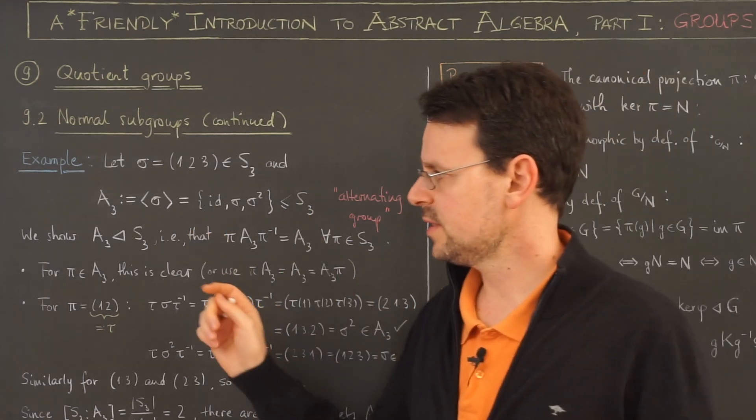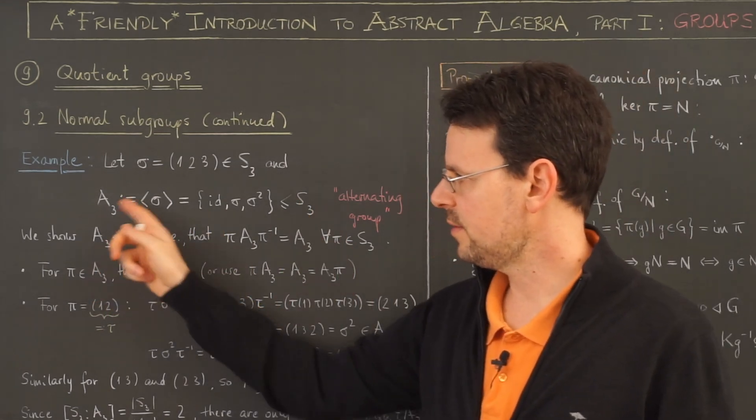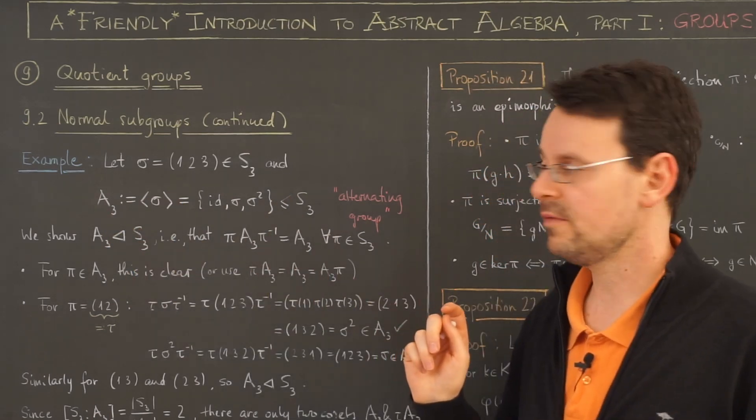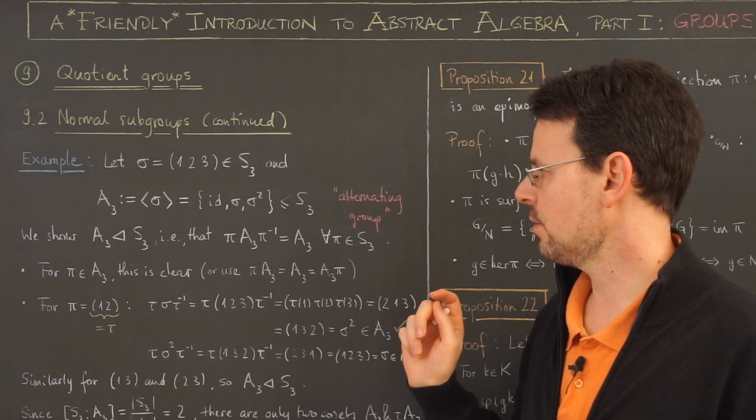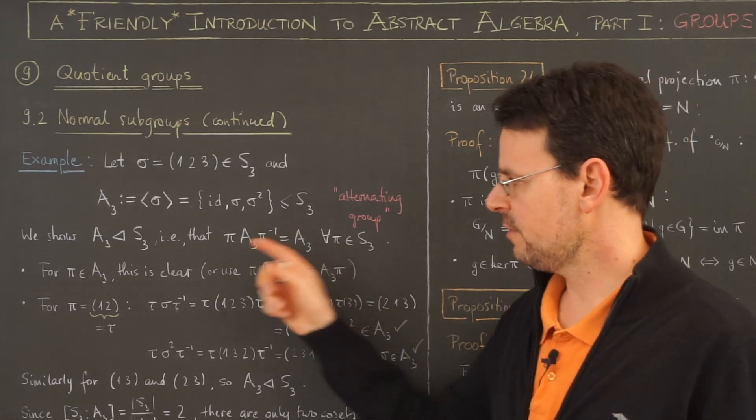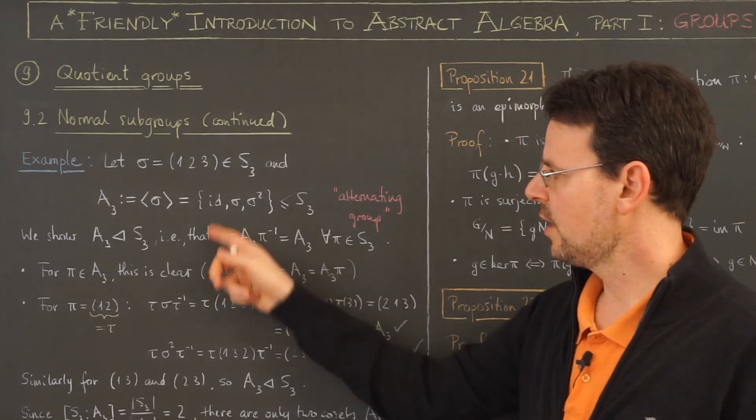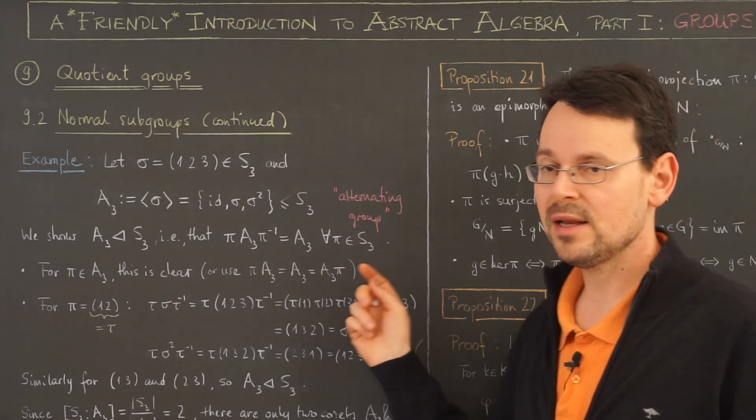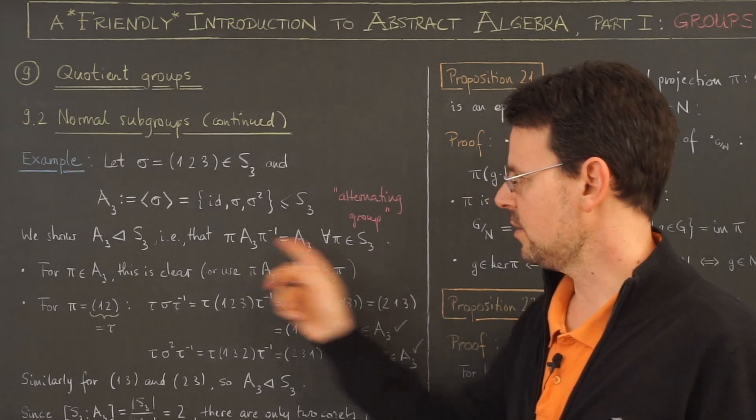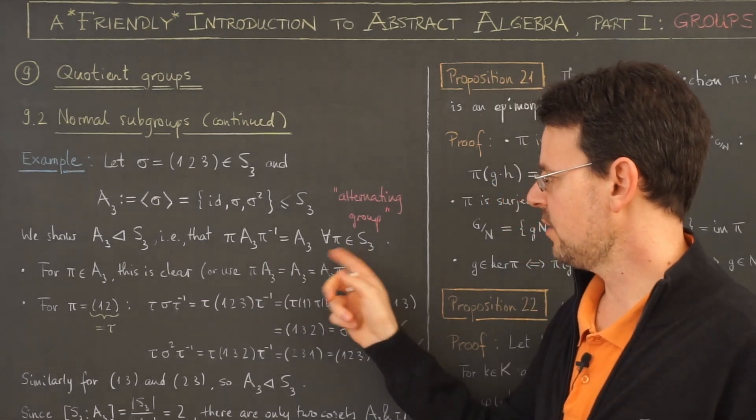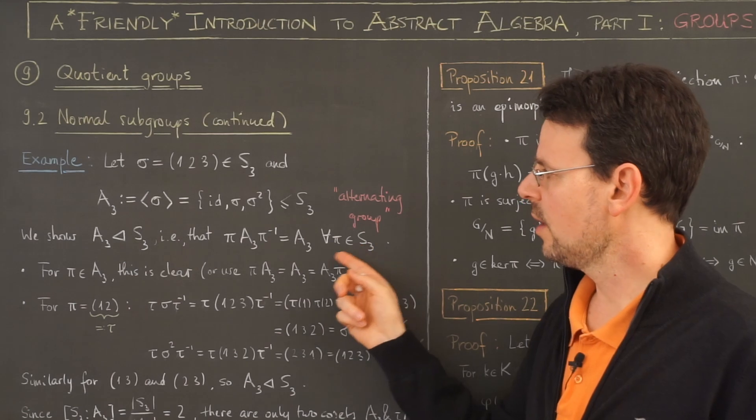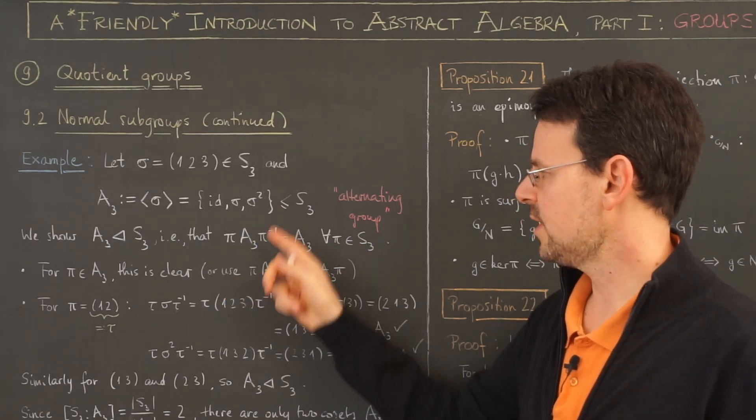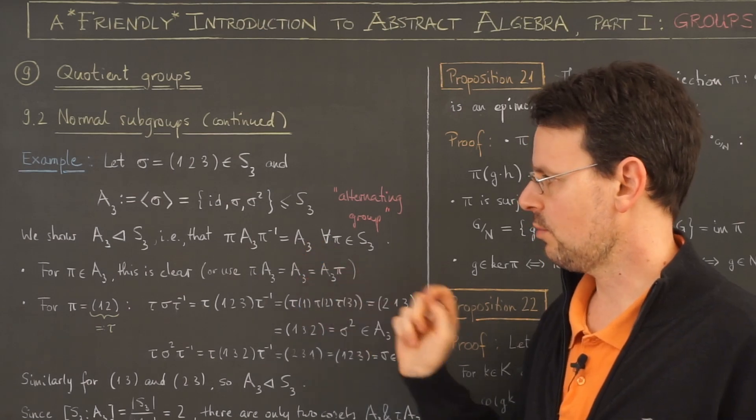But here in this example we will show that this A3 is indeed a normal subgroup of the symmetric group S3, meaning by definition that it is invariant under conjugation with any element of S3. So if I take pi to be any permutation in S3, I must show that pi A3 pi inverse is the same as A3.